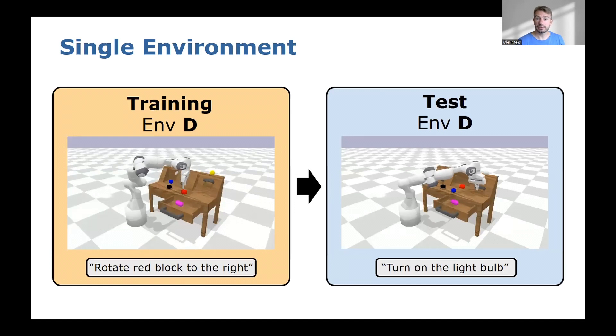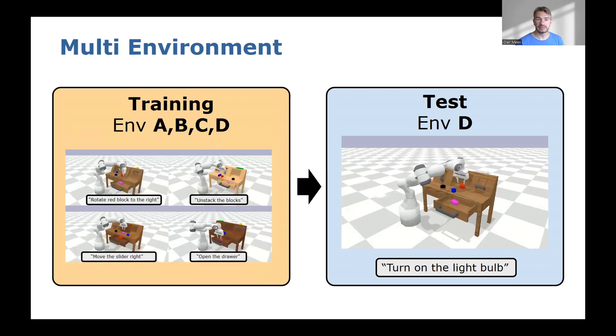We offer three combinations of training and test environments with increasing difficulty. The easiest one is training in a single environment and evaluating the policy in the same environment. This corresponds to the setting of Lynch et al. The second combination is training in all four environments and evaluating the policy in one of them. Here the policy has to generalize to multiple textures and different locations of the sliding door, button, and switch.